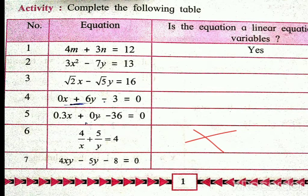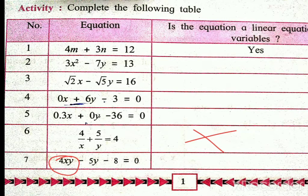The seventh equation: 4xy minus 5y minus 8 is equal to 0. Here x and y are two variables, but the first term is x multiplied by y. The power of x is 1 and the power of y is 1, so the combined degree is 1 plus 1 equals 2. So the degree of this equation is 2 — it is not a linear equation in two variables.